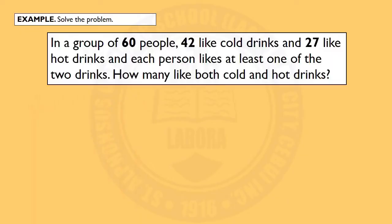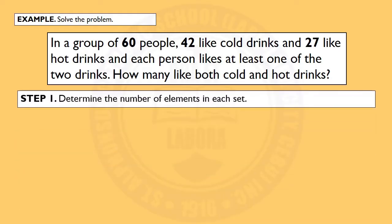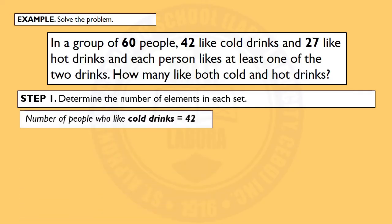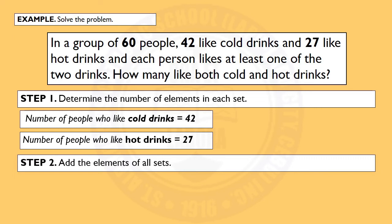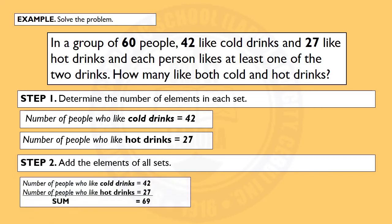Example — solve the problem: In a group of 60 people, 42 like cold drinks and 27 like hot drinks, and each person likes at least one of the two drinks. How many like both cold and hot drinks? Step 1: Determine the number of elements in each set. There are two sets: people who like cold drinks — 42 — and people who like hot drinks — 27. Step 2: Add the elements of all sets: 42 plus 27 equals 69.